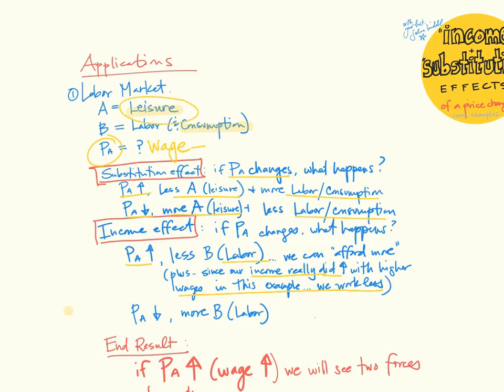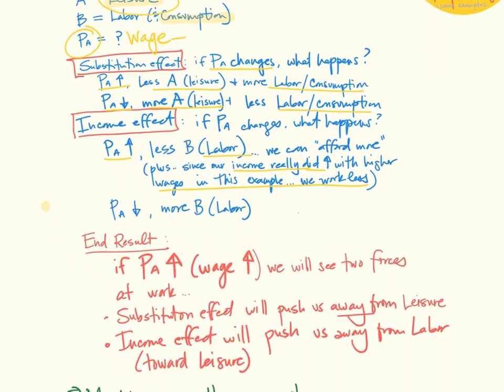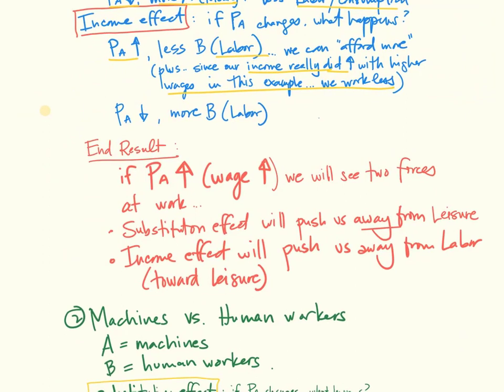So the income effect leads us when wage rises to do more leisure. Substitution effect encourages us to do less leisure. Income effect encourages us to do more leisure when the wage rate rises, and whichever effect is dominant is going to be the thing that determines the shape of our labor supply curve. So the two forces at work, substitution effect pushes us away from leisure when the wage rate goes up, and income effect pushes us away from labor and toward leisure.